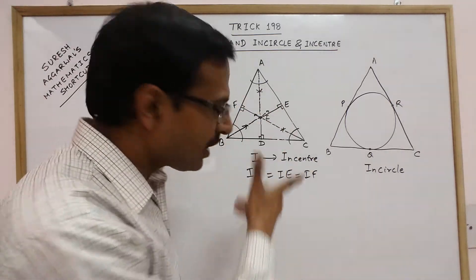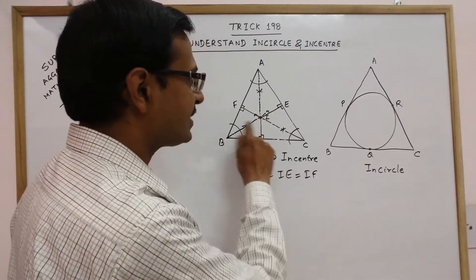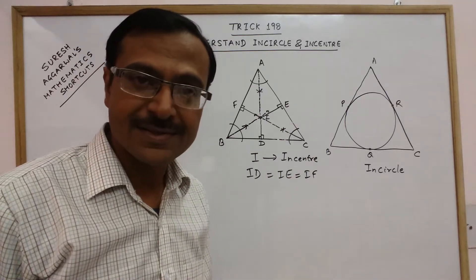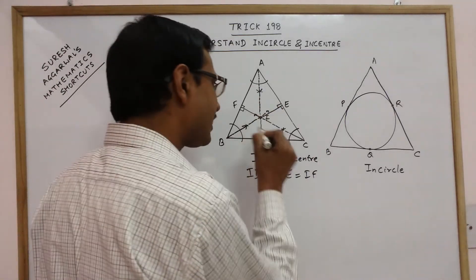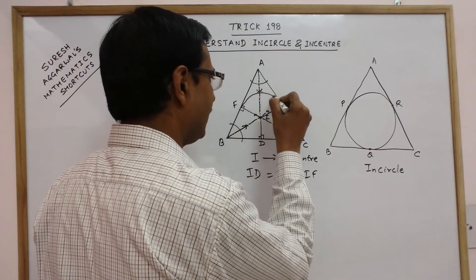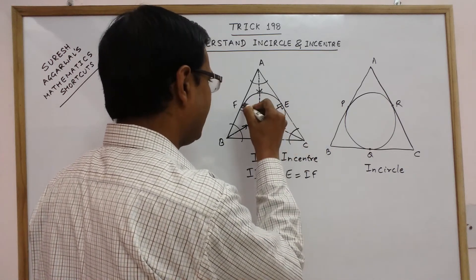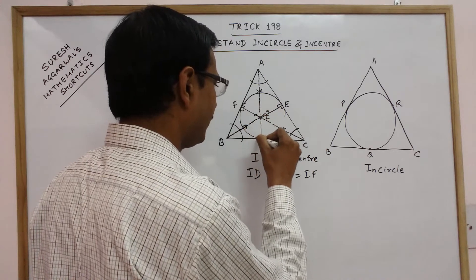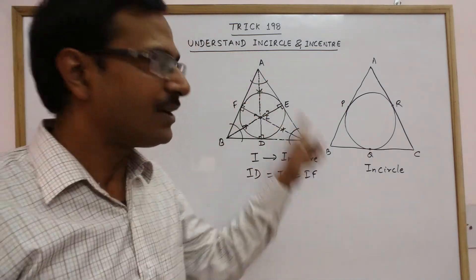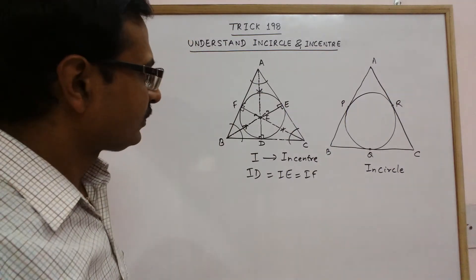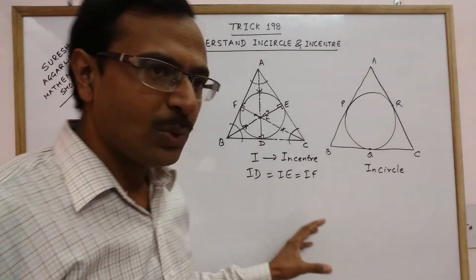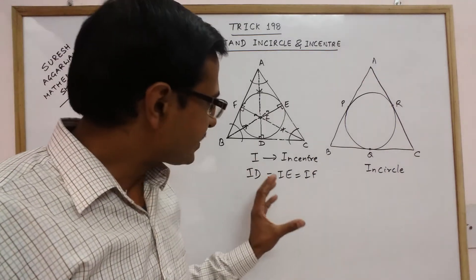We can draw a circle with I as the center and any of these three perpendicular distances as the radius. If you draw this circle, it will automatically form the incircle of the triangle. So I hope this has provided you an understanding of what incircle is and how we draw the incircle of a triangle.